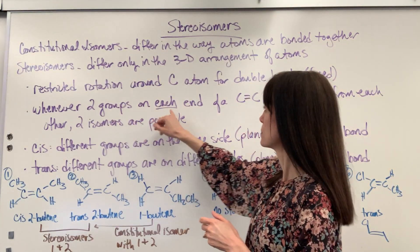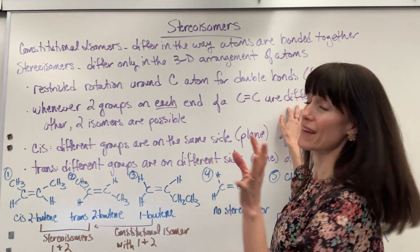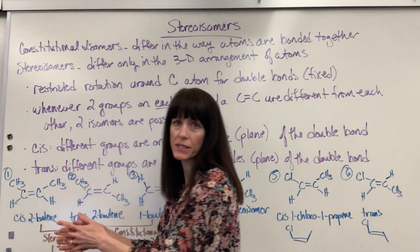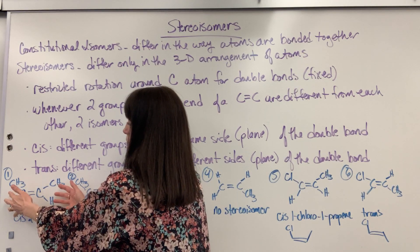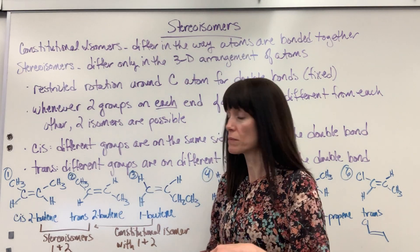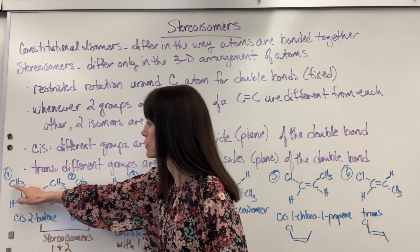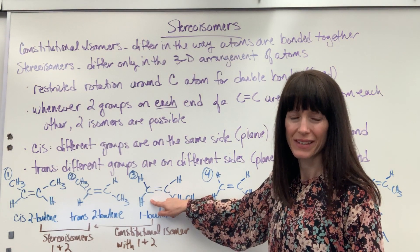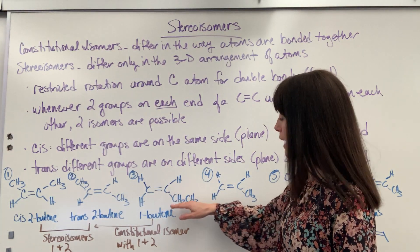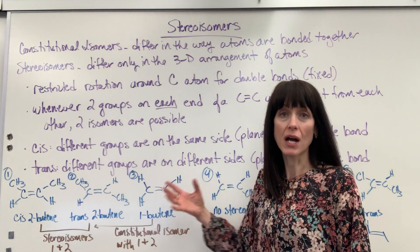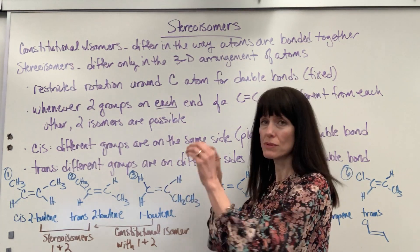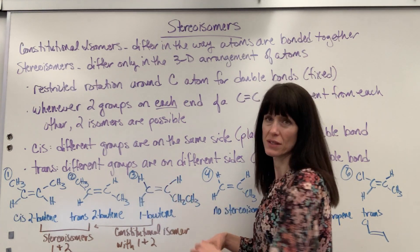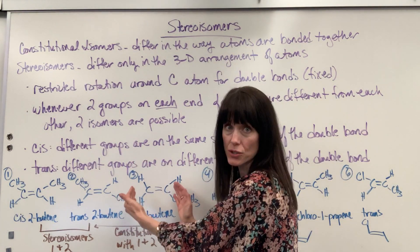Whenever you have two groups on each end of the carbon-carbon double bond, they have to be different from each other, and that means you can have two possible isomers. Looking at each carbon on the right and left of the double bond, you have to have at least two different groups. Here I have a hydrogen and a methyl group on each side — it's the hydrogen and the methyl that makes it different. If you have hydrogen and hydrogen on one side, there's nothing different, so that would not be a stereoisomer. You have to have two different groups on each side.